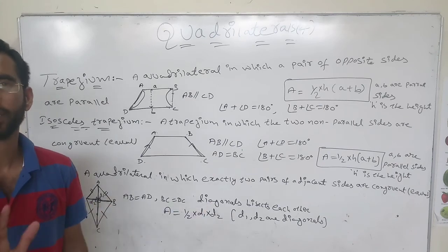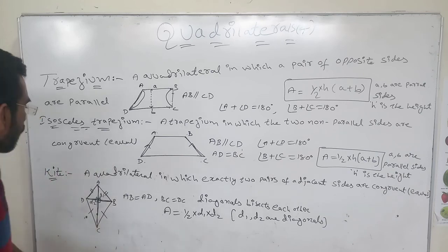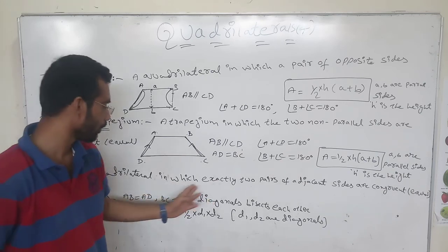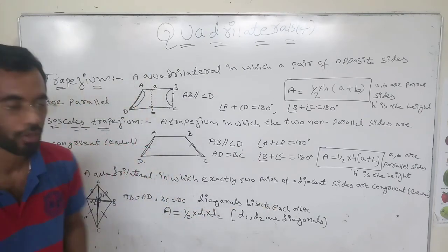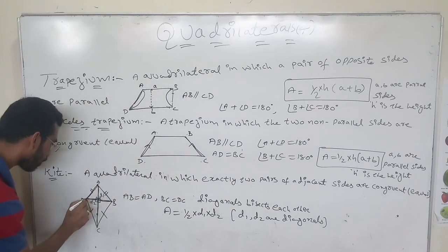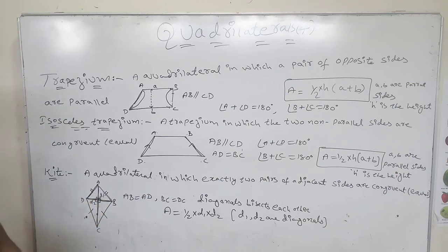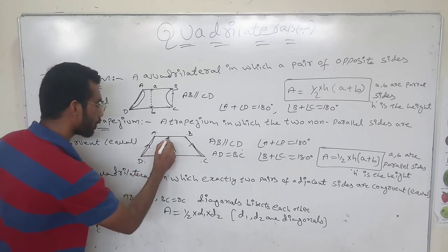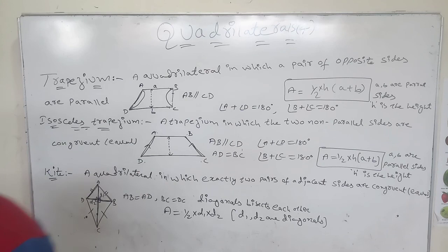D1 and D2 are nothing but the two diagonals. A kite is a quadrilateral in which exactly two pairs of adjacent sides are congruent — congruent meaning equal. Hope everyone understood. Please don't forget to subscribe to my YouTube channel. Thanks for watching.